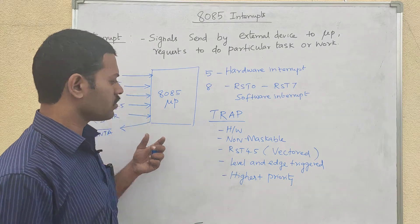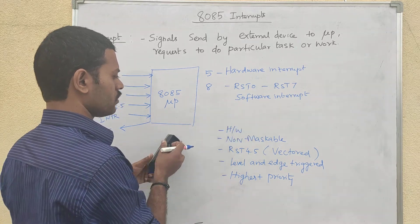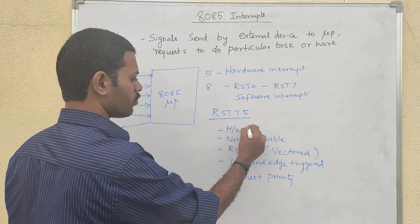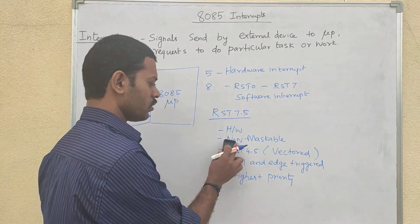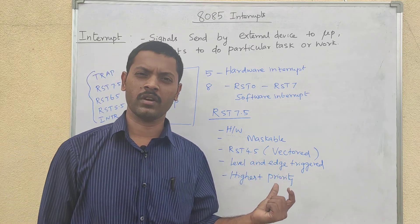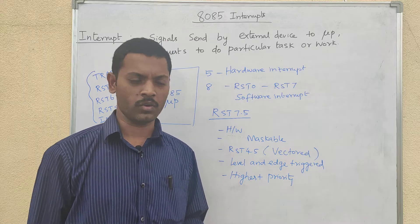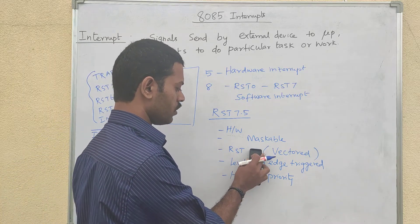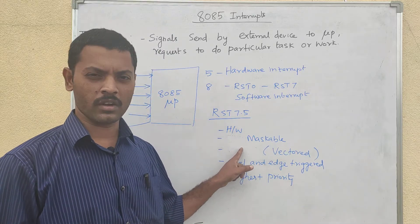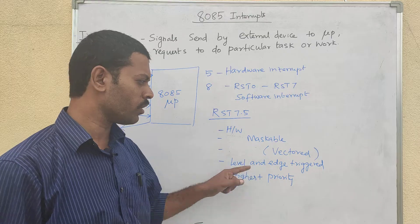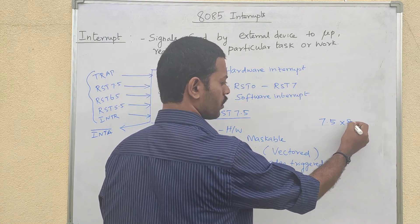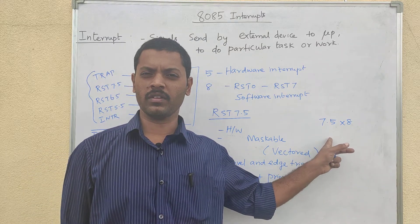Next is RST7.5. RST7.5 is a hardware interrupt and a maskable interrupt — the microprocessor can delay or reject it. RST7.5 is also a vector interrupt. The ISR address location is fixed inside the microprocessor. RST7.5 is a hardware interrupt with a fixed vector address.